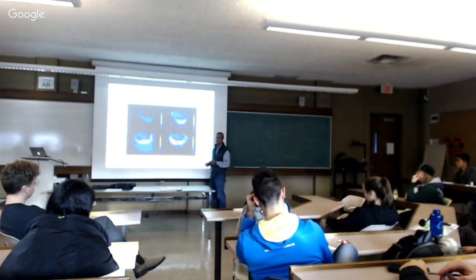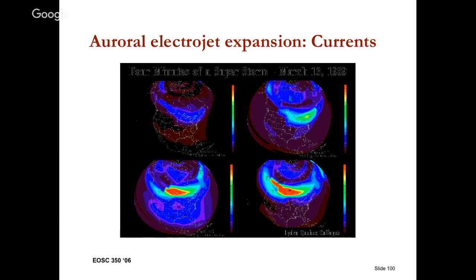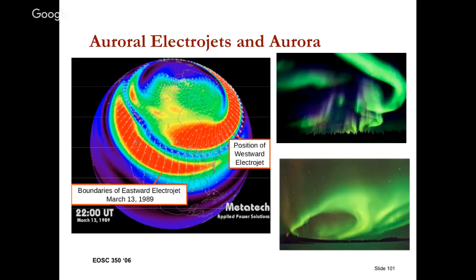Where is the aurora oval? It changes during a big storm. Here are pictures as a function of time from a major storm — the color intensity shows the magnitude of the currents. You can see the currents increasing and moving southward. And this is what the resulting visual aurora looks like. For those who haven't seen it, it's something you've got to do once in your lifetime — sheets of shimmering light. It's quite magical.